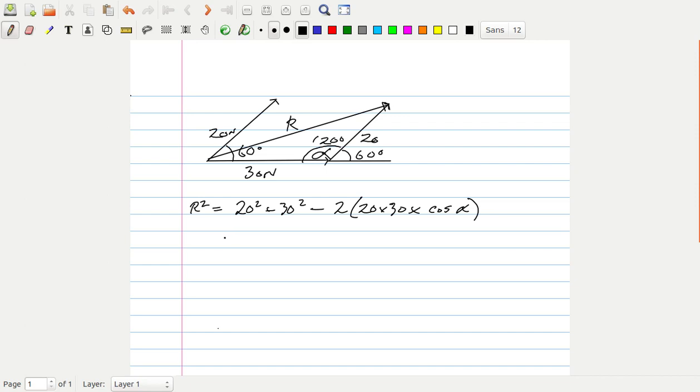And the cosine of 120 degrees is minus 0.5. So R squared equals 400 plus 900 minus 2 times 600 times minus 0.5, which is equal to 1,300. And because a minus times a minus makes a plus, it's 1,300 plus 600, which equals 1,900. And so R is equal to the square root of 1,900.